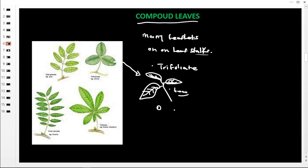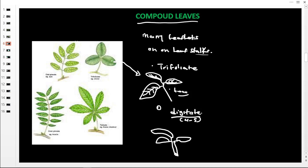Next is compound digitate. This ranges from four to five leaflets. The main leafstock branches and forms leaflets — one, two, three, four, five — either four or five in number. This forms the compound digitate, and it is mainly found in groundnut plants.